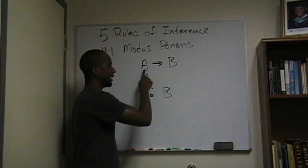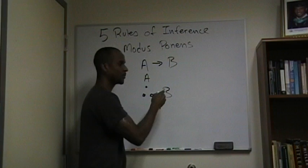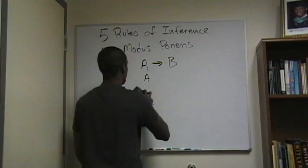For example: if I jump, I will fall. I jump, therefore I will fall. This is known as modus ponens.